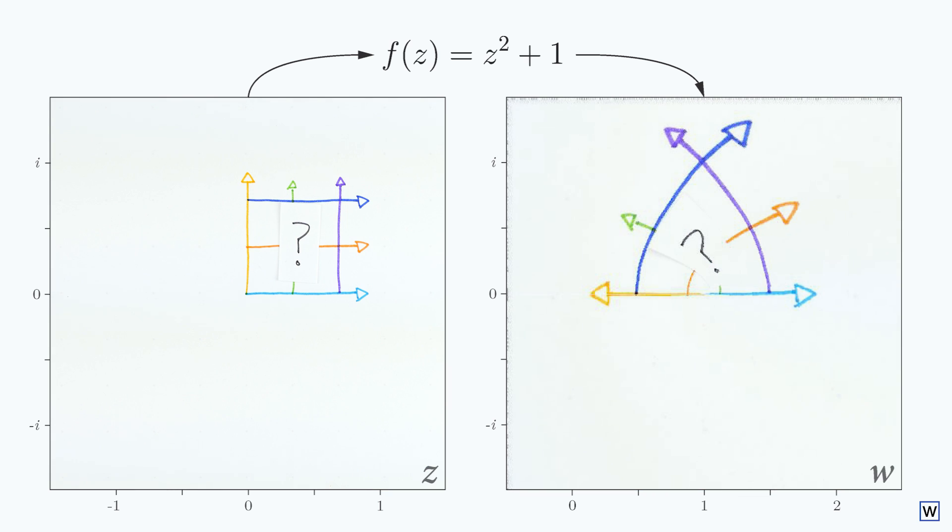What else would be interesting to draw in our input space to test our mapping? What shape would you draw to learn more about what our function is doing? Next time, more shapes.